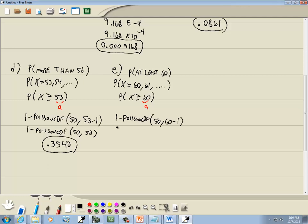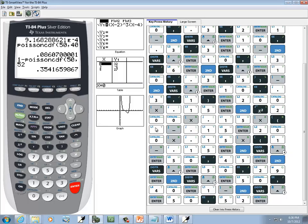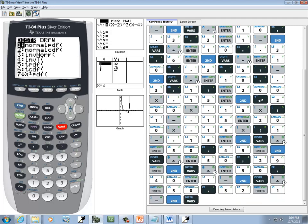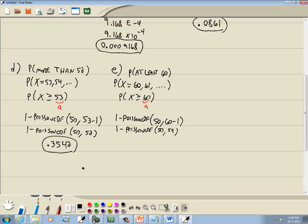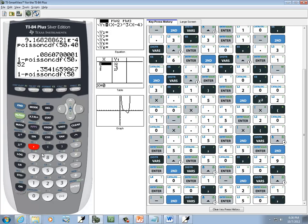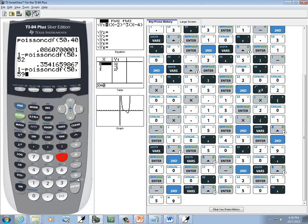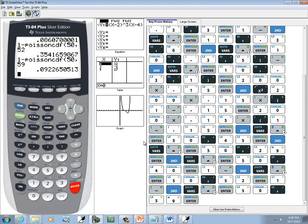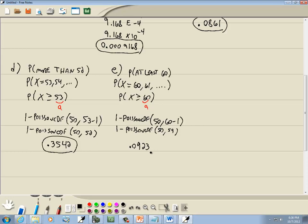So this would be 1 minus Poisson CDF, 50, and 59. So we've got 1 minus 2nd vars, Poisson CDF, 50, 59. And we get 0.0923, rounding to four decimal places.